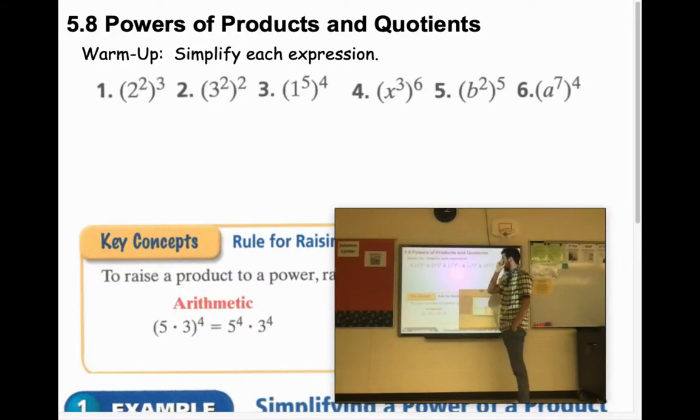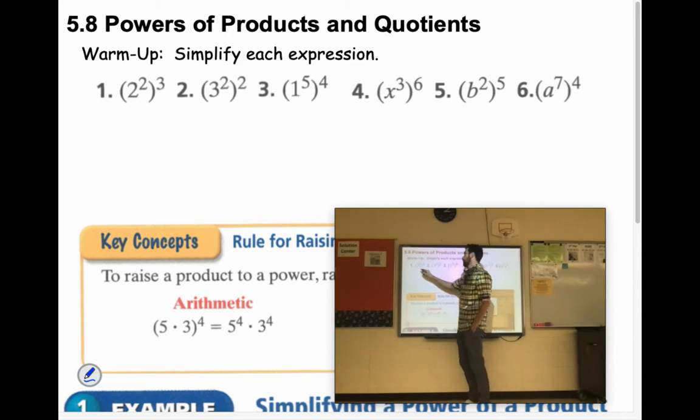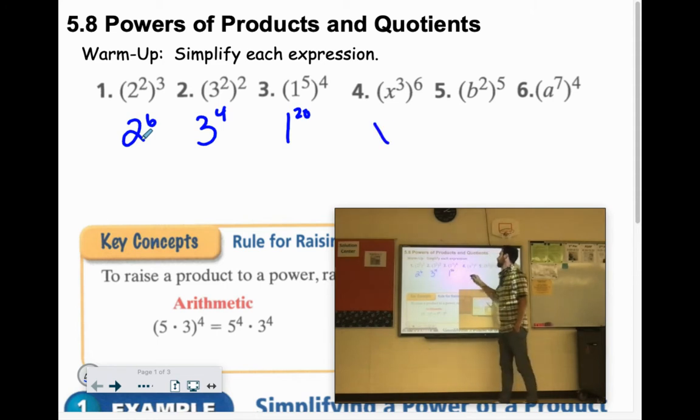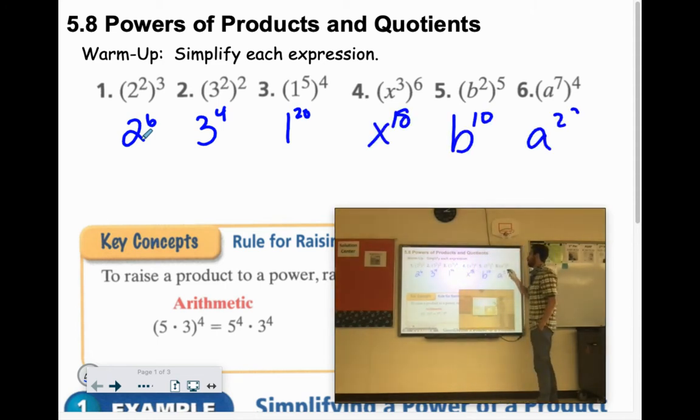Remember, when you go power to power, like on these warm-up problems, you multiply the exponent. So we have 2 to the 6th, 3 to the 4th, 1 to the 20th, x to the 18th, b to the 10th, and a to the 28th.